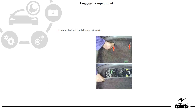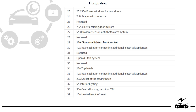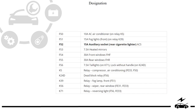Luggage compartment fuse box: location. Type 1: diagram, designation. Type 2: diagram, designation.